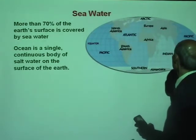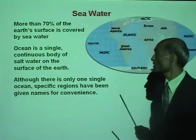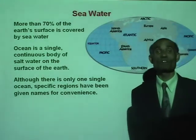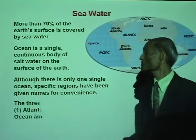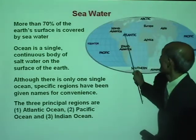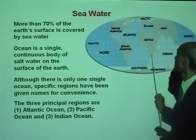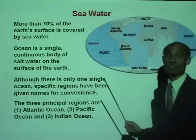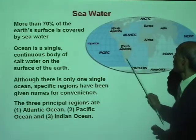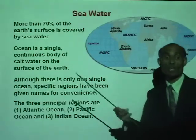Unlike what many people think, that we divide the ocean into various parts, actually the ocean is a single body of water. Although there is only one single ocean, specific regions have been given names for convenience. The three principal regions are the Atlantic Ocean, the Pacific Ocean, and the Indian Ocean. From this picture, the Pacific seems to be the largest.